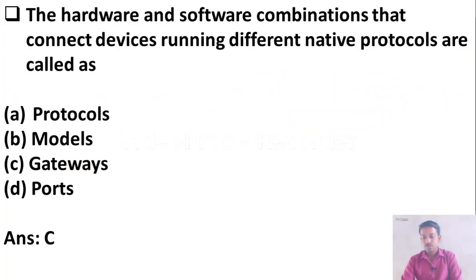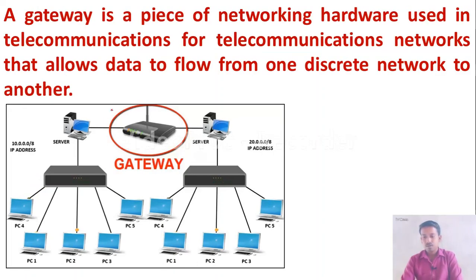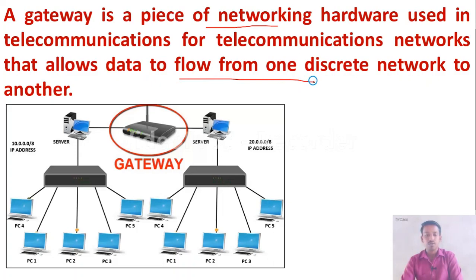The hardware and software combinations that connect devices running different native protocols are called — Option A: protocols, Option B: models, Option C: gateways, Option D: ports. The right answer is Option C, gateways. A gateway is a piece of networking hardware used in telecommunications that allows data to flow from one network to another.